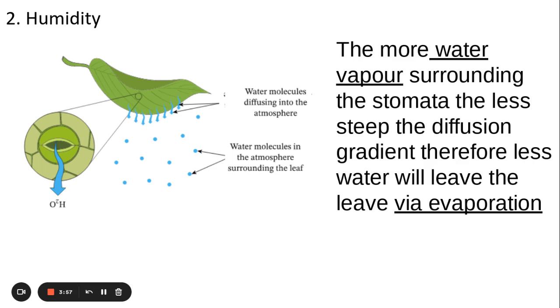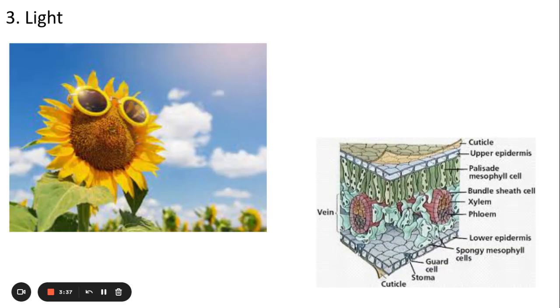Humidity is the next one. The higher the humidity, it means the higher the concentration of water vapor outside of the stomata. If I have an increased concentration of water vapor surrounding my stomata here, it means that the diffusion gradient between the water inside and outside is going to be very low, so therefore less water will leave through evaporation.